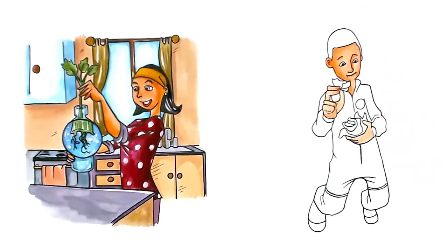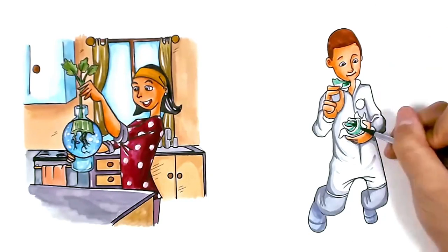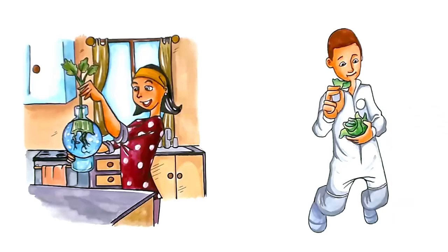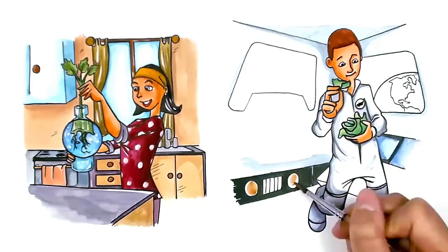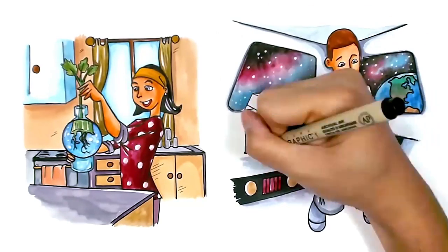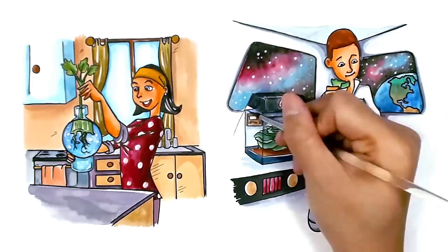In 2015, NASA's astronauts bit into the first hydroponically space-grown lettuce aboard the International Space Station. And with plans for launches to Mars, the future of farming is sure to be out of this world.